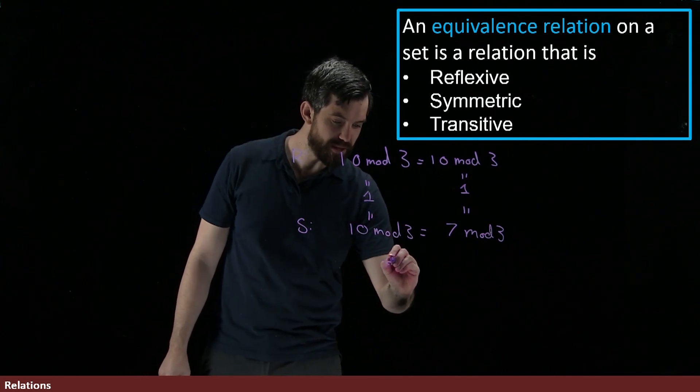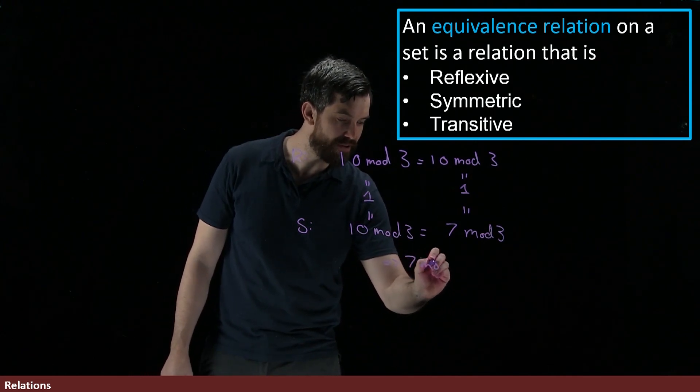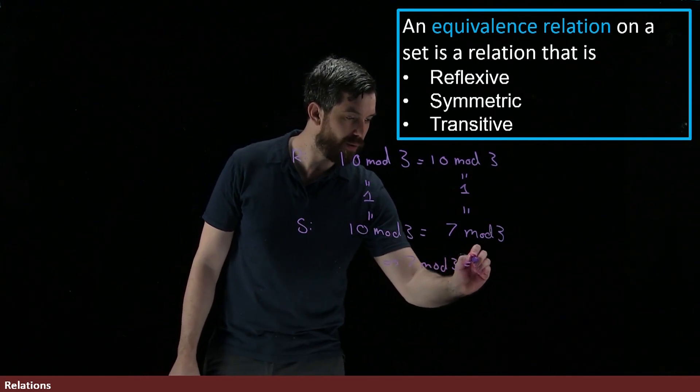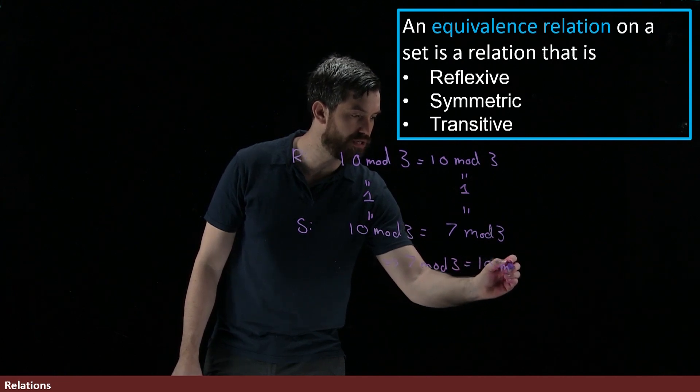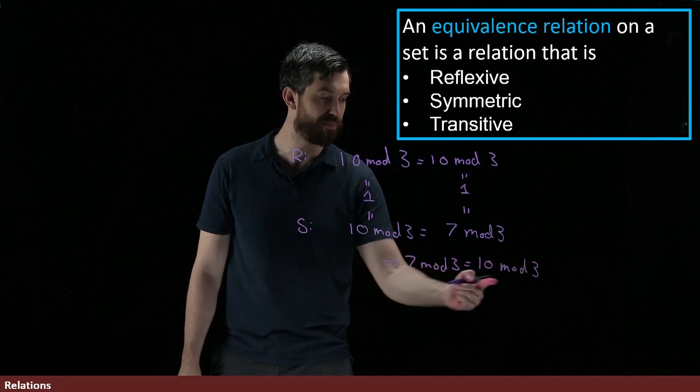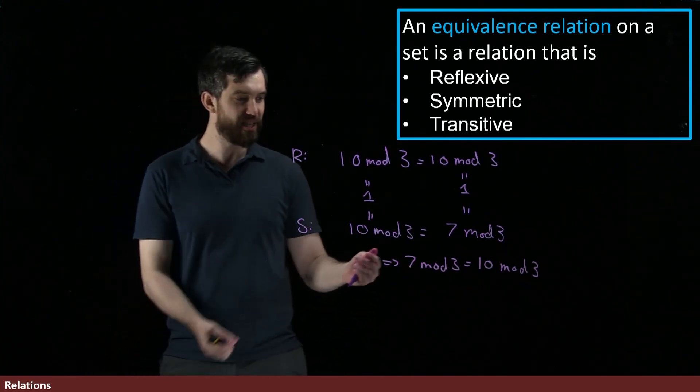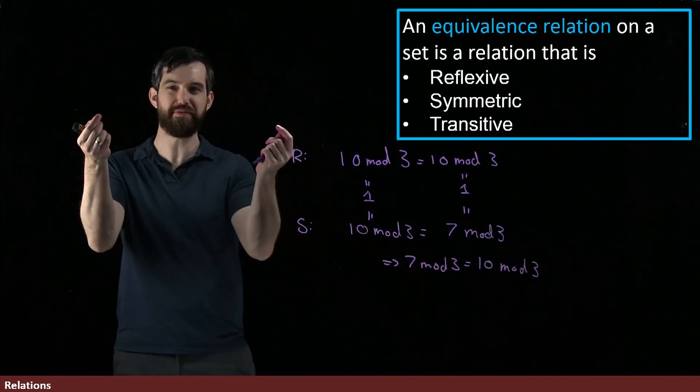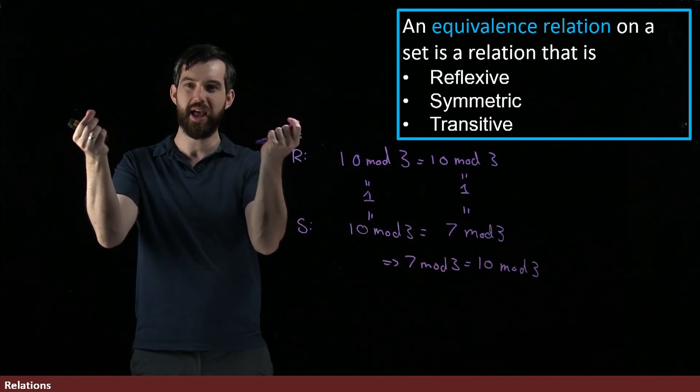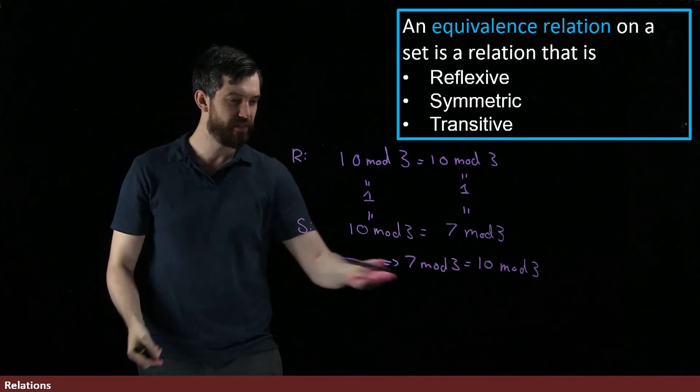But then if I flip this around and try to write 7 mod 3, well, that is also equal to 10 mod 3. Indeed, these are both just equal to 1 and 1 is equal. So we have this symmetric property for modular arithmetic. If you have two mod things that are equal and you flip their order around, they're still going to be equal.